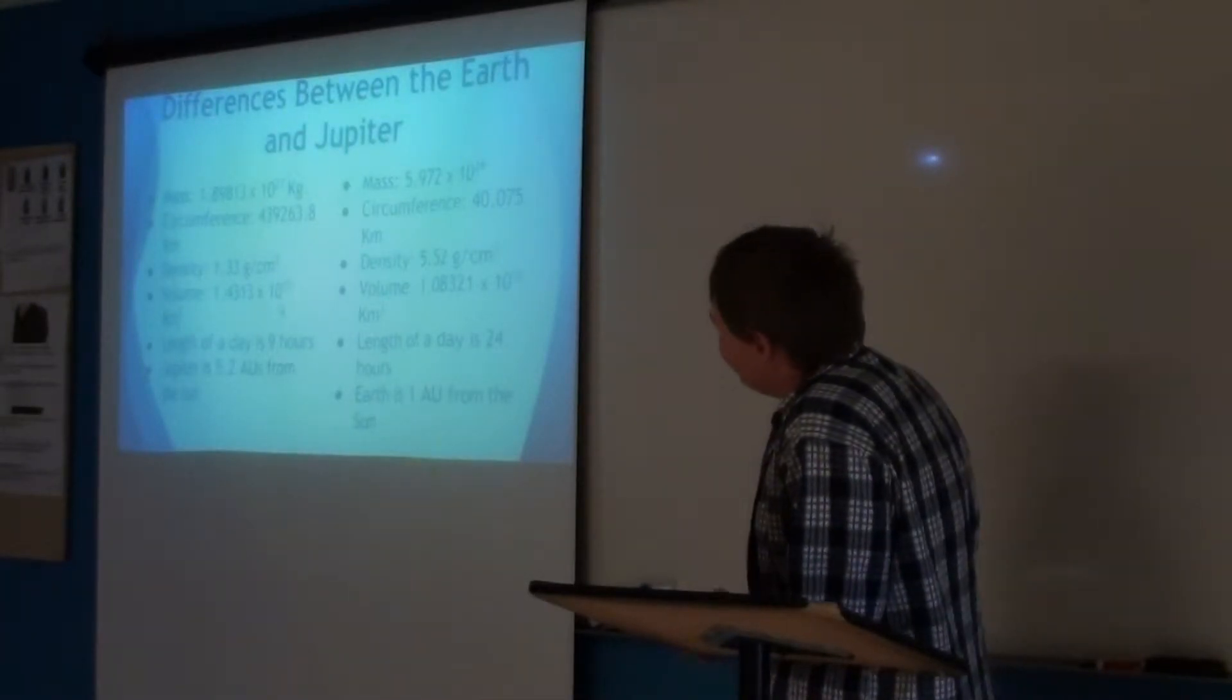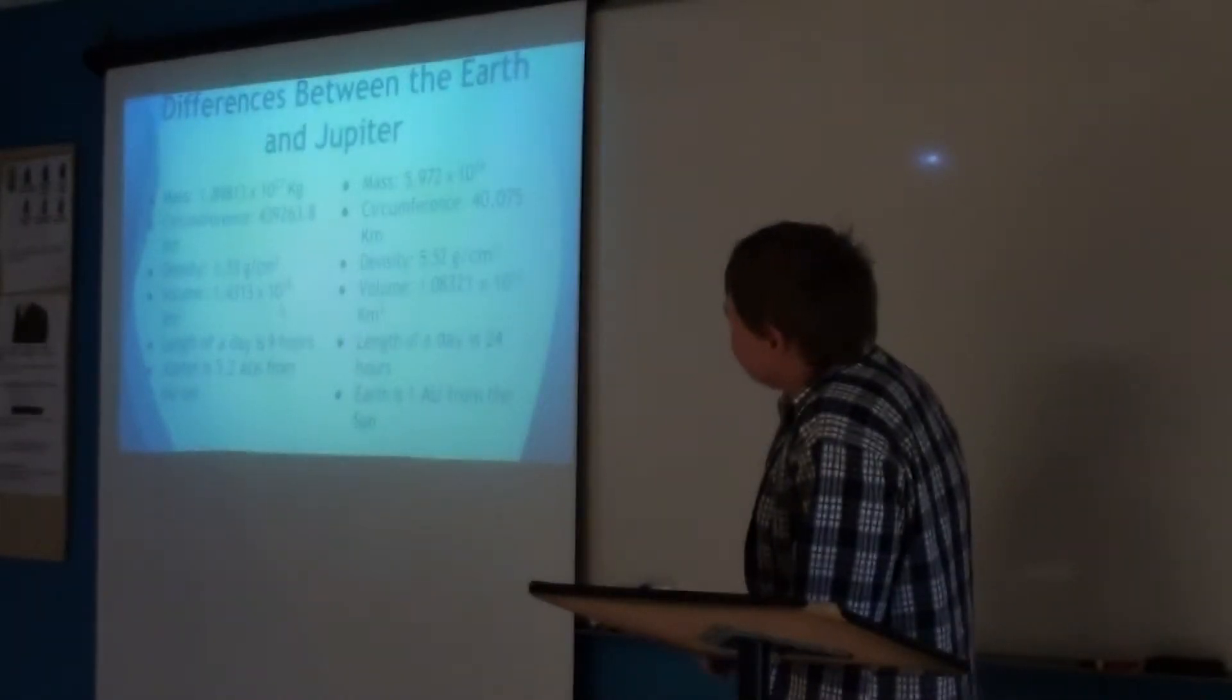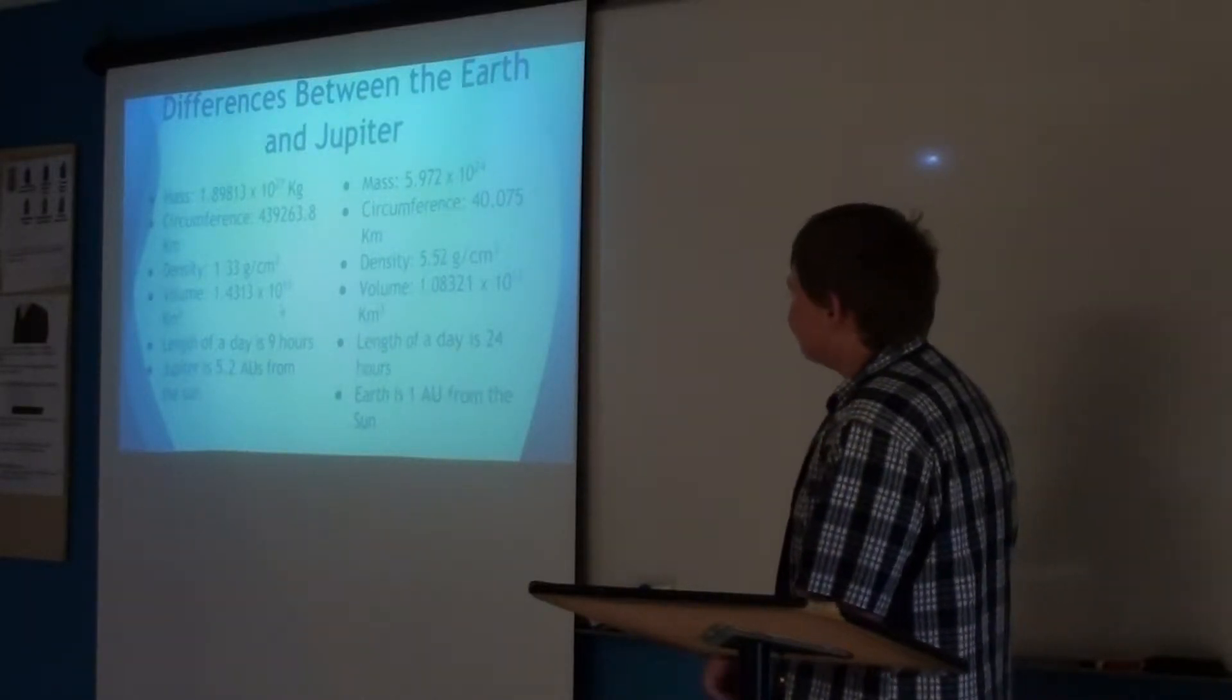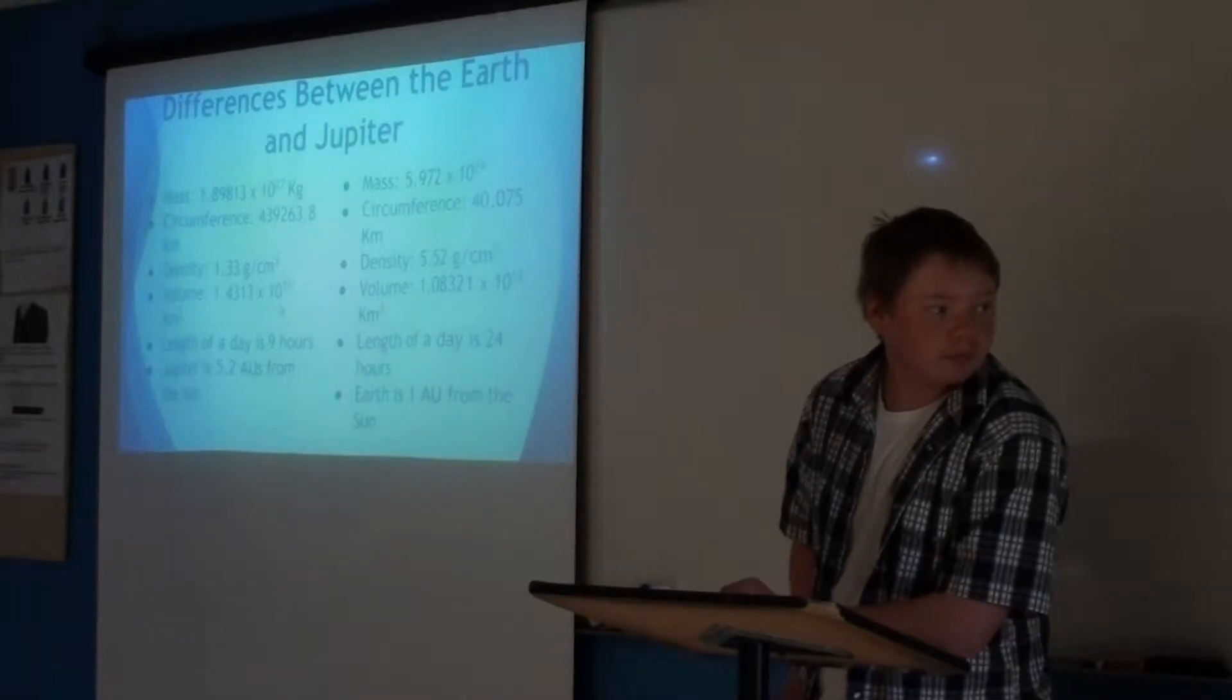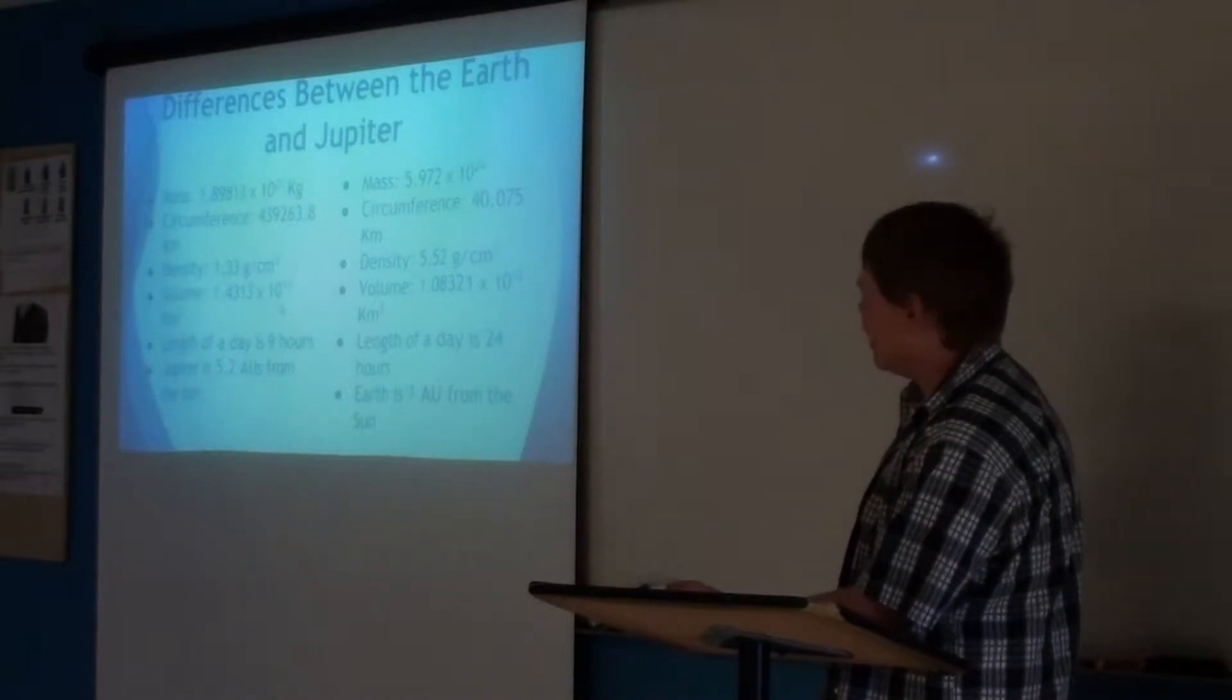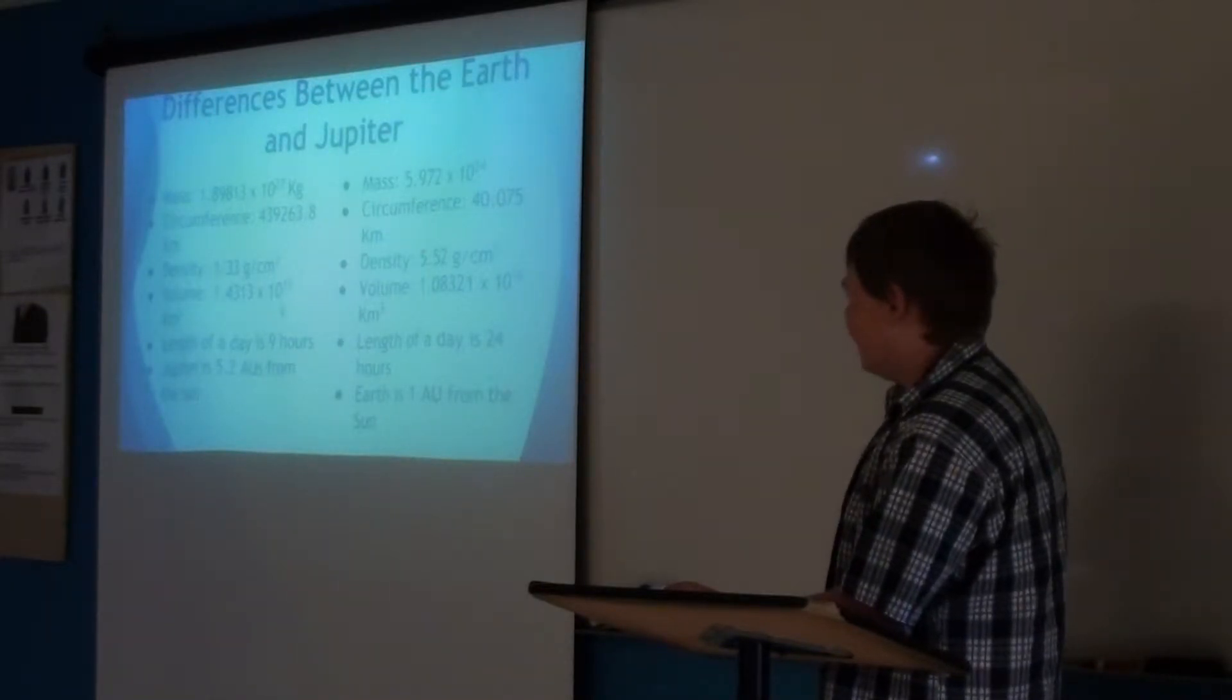The difference between Earth and Jupiter: the mass of Jupiter is 1.8913 times 10 to the 27th kilograms. The mass of the Earth is 5.972 times 10 to the 24th, so it's kind of close as a mass. I'm sorry, no, because adding three zeros to the end, that's a lot of difference, actually. The circumference is 40,700 kilometers, the density is 5.5 grams per centimeter cubed, the volume is 1.08321 times 10 to the 12th. The day is 24 hours, and the Earth is 1 AU from the sun.